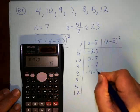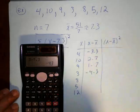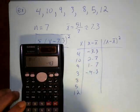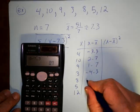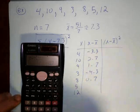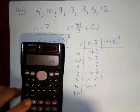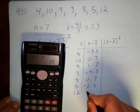3 minus—I could probably be doing these in my head, but I just want to make sure I get all the right numbers—negative 4.3. So 8 minus 7.3 is 0.7, 5 minus 7.3 is negative 2.3, 12 minus 7.3 is 4.7.